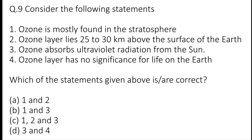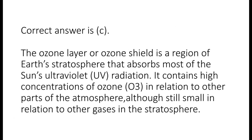Question 9: Consider the following statements: 1. Ozone is mostly found in the stratosphere. 2. The ozone layer lies 25 to 30 kilometers above the surface of the earth. 3. Ozone absorbs ultraviolet radiation from the sun. 4. The ozone layer has no significance for life on the earth. Which of the statements given above are correct? Options are A: 1 and 2, B: 1 and 3, C: 1, 2 and 3, or D: 3 and 4. The correct answer is C. The ozone layer or ozone shield is a region of earth's stratosphere that absorbs most of the sun's ultraviolet radiation. It contains high concentrations of ozone O3 in relation to other parts of the atmosphere, although still small in relation to other gases in the stratosphere.